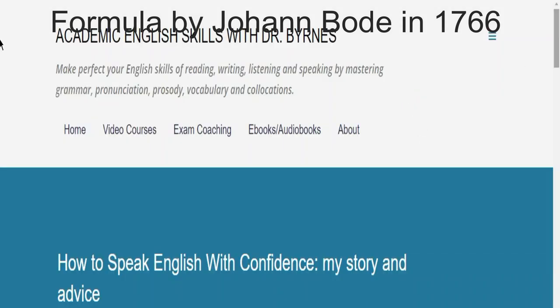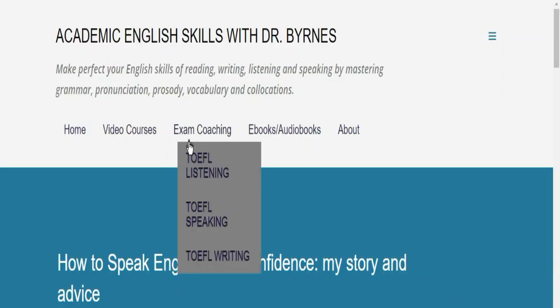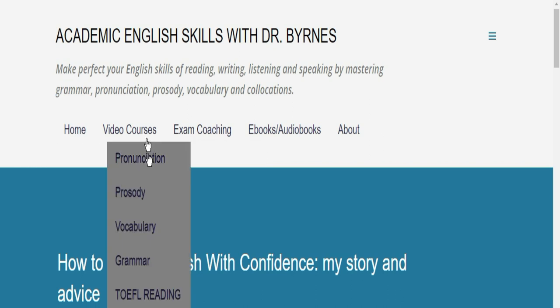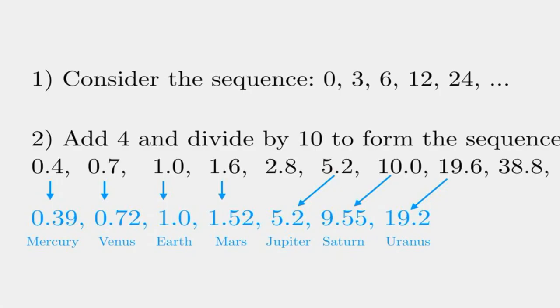I think the reason that the TOEFL lecture on Bode's law is difficult is that most people do not have the background history when Bode proposed the law. That is, what was going on in 1766. They already knew about the existence of these five planets as they were identified by Babylonians 2000 BC: Mercury, Venus, Mars, Jupiter, and Saturn.